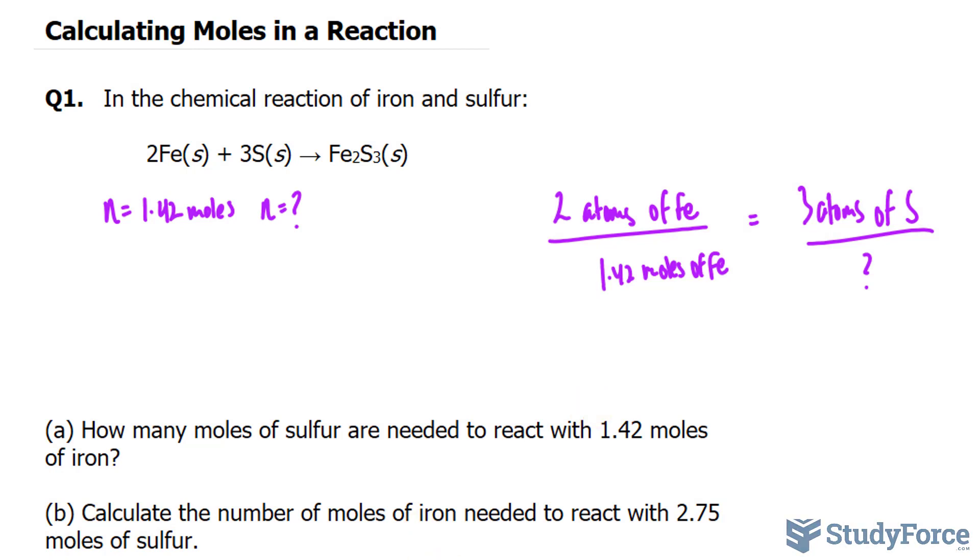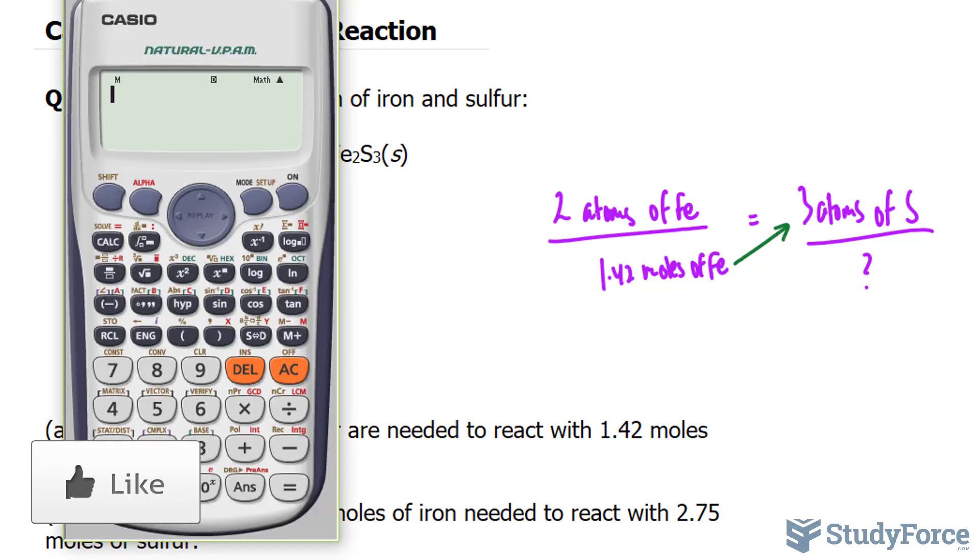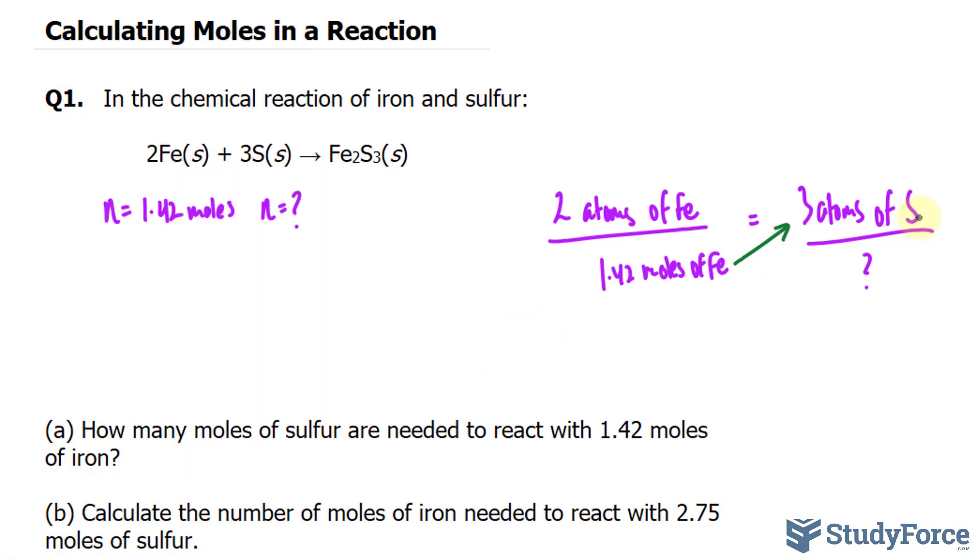To solve a proportion, we'll cross-multiply. So we'll take this number, multiply it to three. 1.42 times three. Then we can take this unknown, which we can call N. Remember, we set it as N. N times two is 2N. So we have 2N on the right side.